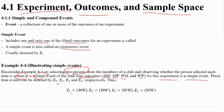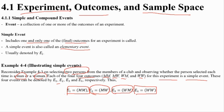For example, selecting only two men is one event — that's a simple event. Selecting only two women is also a simple event. Each individual combination — man-woman, woman-man — listed separately are each called simple events, because each has only one outcome.